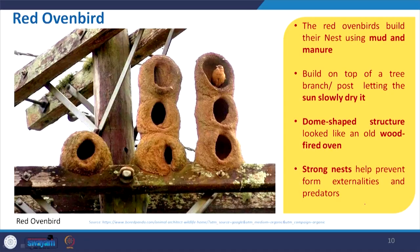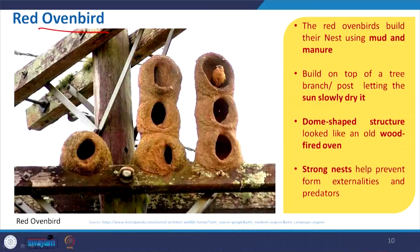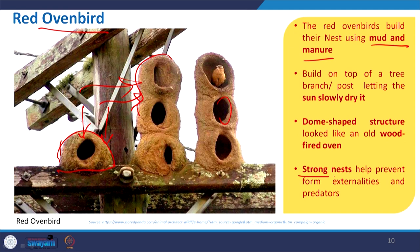Now we move to the Red Oven Bird. This time it is not grass — they use mud and manure to create a dome-shaped structure. Over time with sunlight it dries up, giving solidity and stability to the structure with small openings. They can create multiple chambers for multiple users. The dome shape is good for distributing load and resisting wind. This nest helps them prevent externalities.